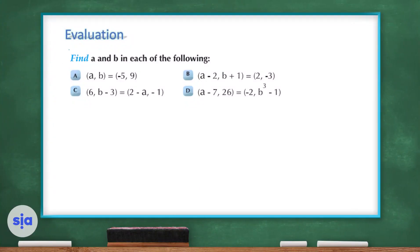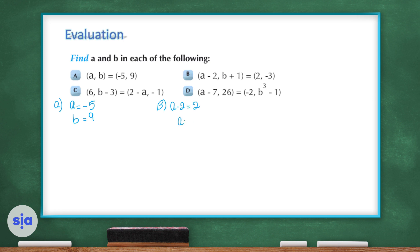Now for the evaluation section — please pause the video, answer the four questions, then play again. Question A: x values are equal and y values are equal when ordered pairs are equal, so a equals negative 5 and b equals 9. Question B: a minus 2 equals 2, so a equals 4; and b plus 1 equals negative 3, so b equals negative 4.